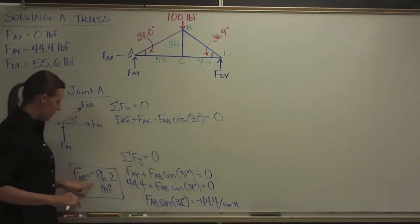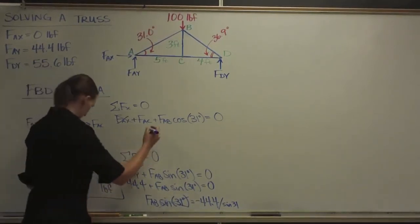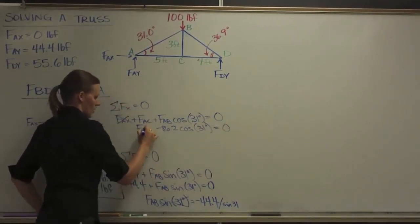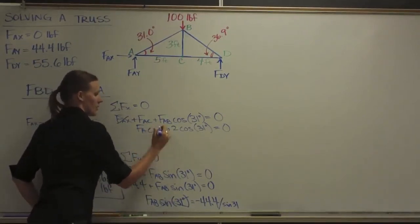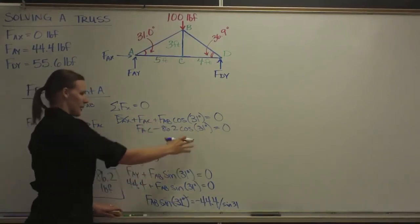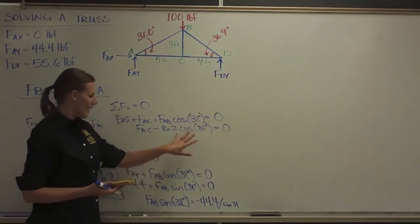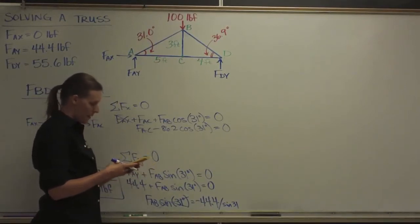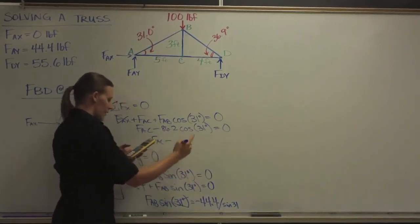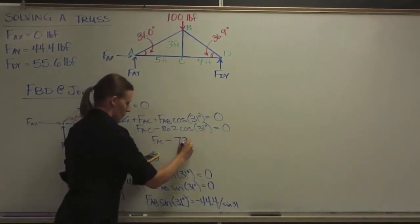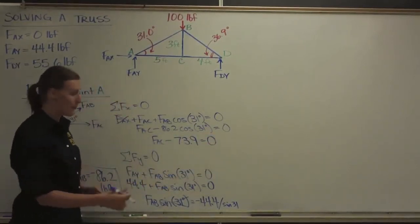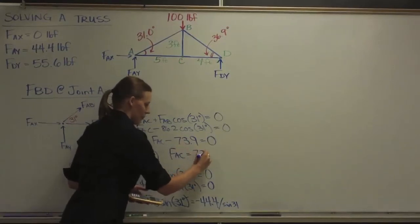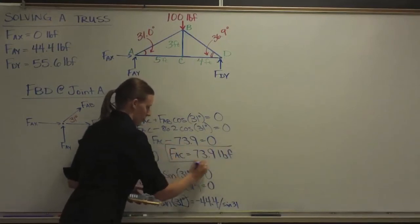Now substituting F-A-B equals negative 86.2 back into the X-direction equation to solve for F-A-C: negative 86.2 times cosine of 31 equals negative 73.9. So F-A-C plus negative 73.9 equals zero, and adding 73.9 to both sides gives F-A-C equals positive 73.9 pounds. That's two members found.